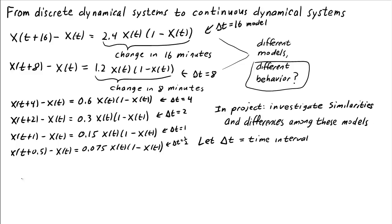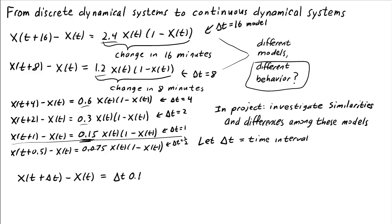It'll be easier to do this experimentation if we rewrite all these models using the same form, only introducing a parameter for the change in time. So let's let delta t equal the time interval. We can rewrite all these models in a single form: x(t + delta t) minus x(t) — the change over time delta t. All these rates are proportional to delta t and can be written as delta t times 0.15. So all the models are of the form x(t + delta t) minus x(t) equals delta t times 0.15 times x times (1 minus x).